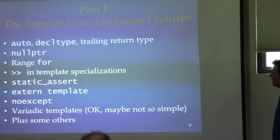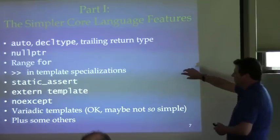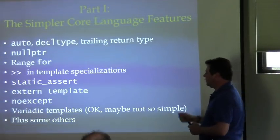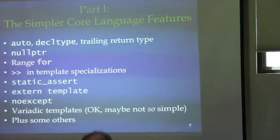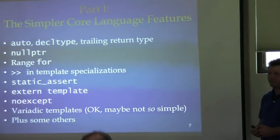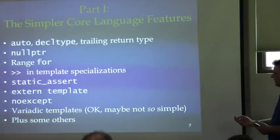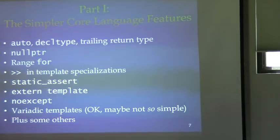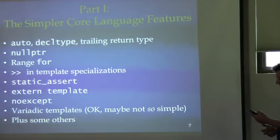Part one: we're going to look at some new keywords — auto and decltype, and the syntax for trailing return type for functions and lambdas. The nullptr keyword. The new range-based for, which fixes an annoying little problem in old C++. Static assert, which brings compile-time asserts into the language. External template, which solved a problem causing a lot of grief around the most efficient way to compile and reuse templates. The noexcept keyword, which solves a problem caused by issues with old C++ exception specifications. Variadic templates — and a few other minor things.